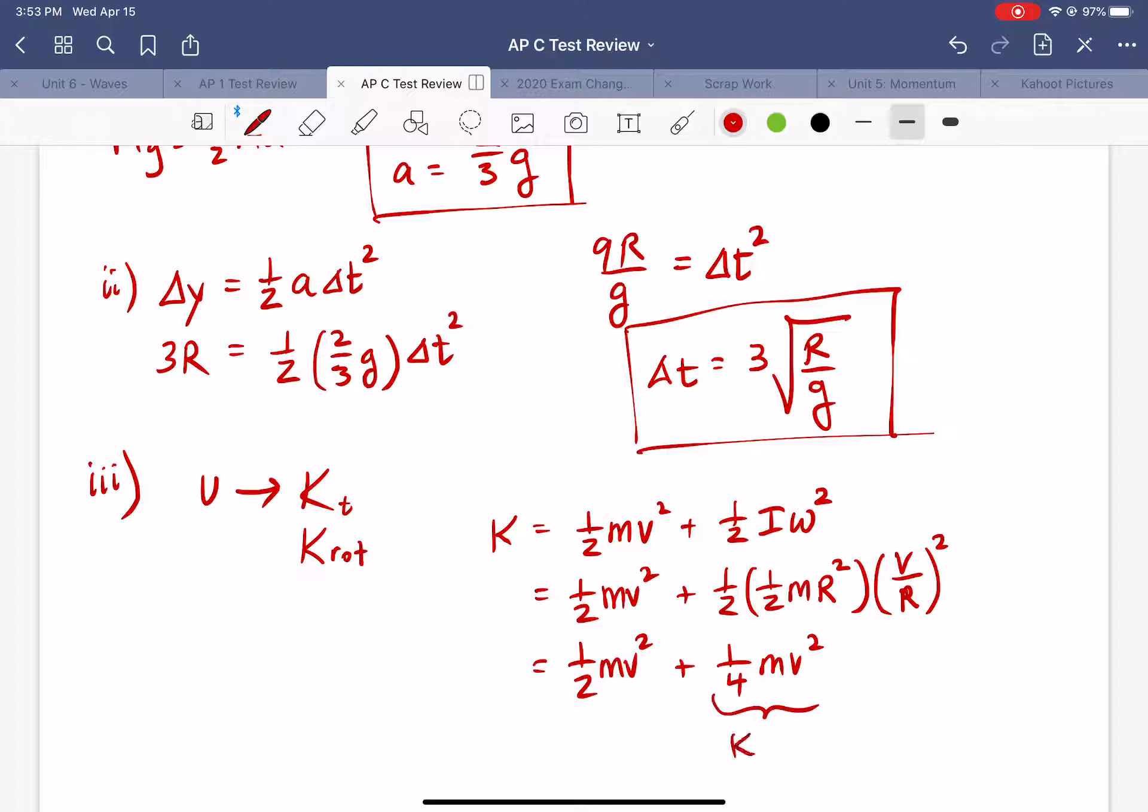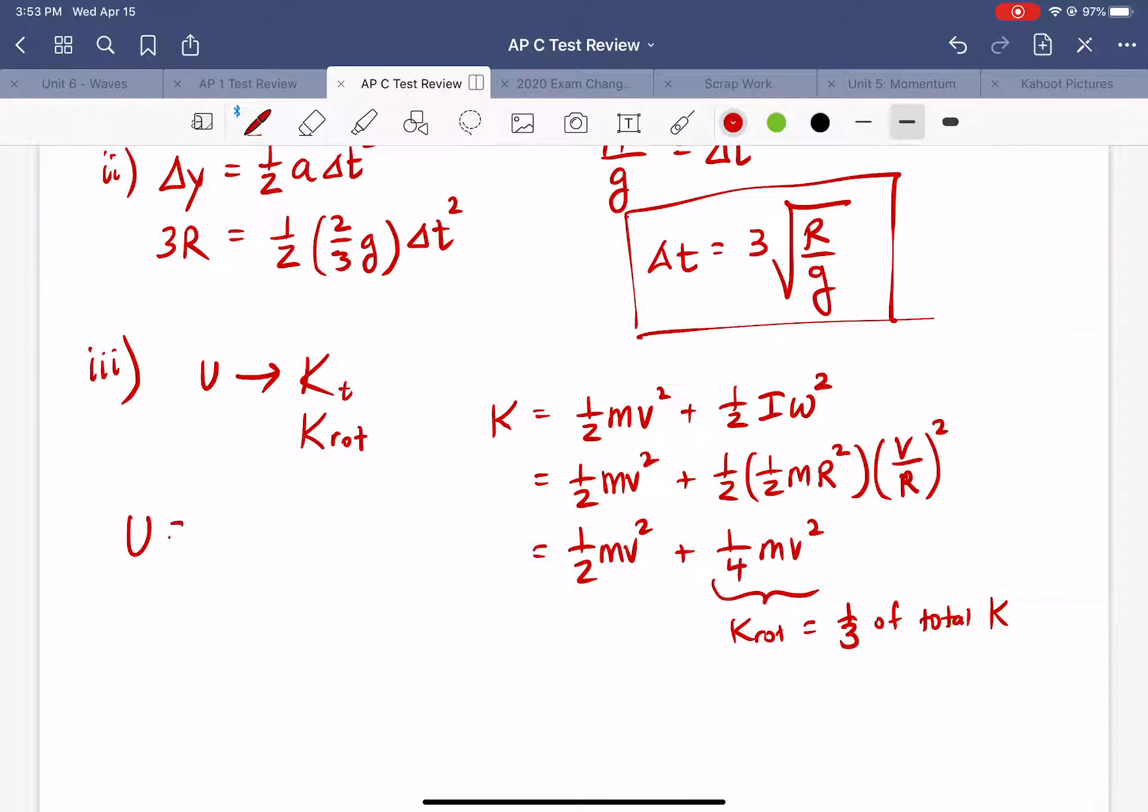So I got 1/2 mv² for the kinetic energy and then 1/4 mv² for the rotational kinetic energy. So this is the rotational kinetic energy and if you look at this this is 1/3 of the total kinetic energy. So we have a potential energy to start with of m times g times 3R. One third of that is going to be converted into rotational kinetic energy. So it's just mgR.